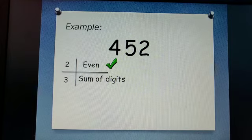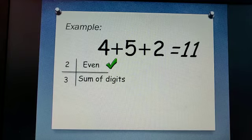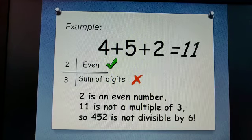Now let's add up our digits. Four add five is nine. Add two is 11. Eleven is not in our three times table, so it's not divisible by three, which means 452 is not divisible by six.